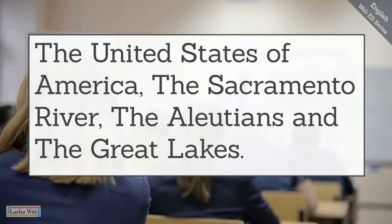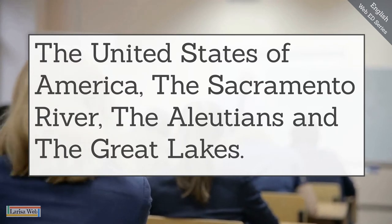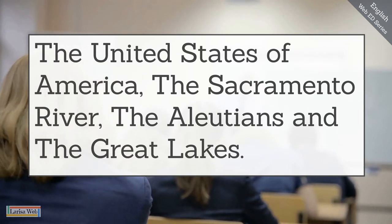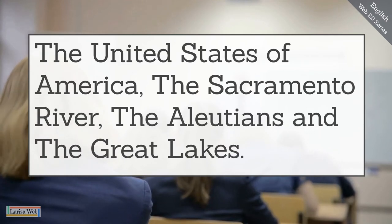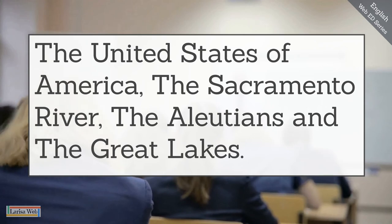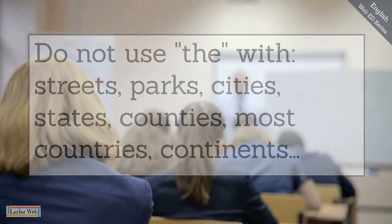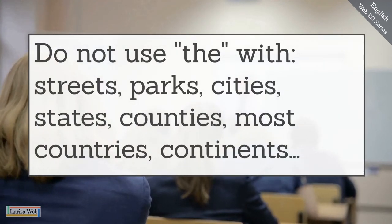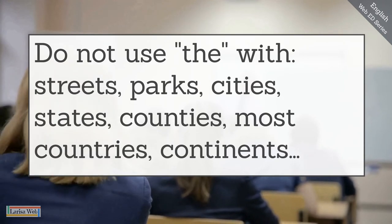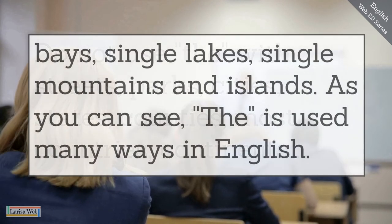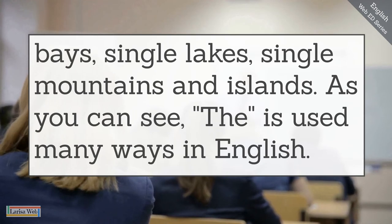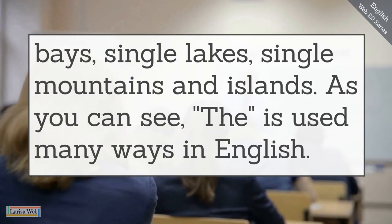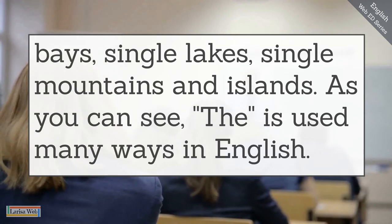The United States of America has many states — these are groups. For rivers, like the Sacramento River, we always put the before the name of a river. The Aleutians and the Great Lakes. Do not use the with streets, parks, cities, states, counties, most countries, continents, bays, single lakes, single mountains, and islands.